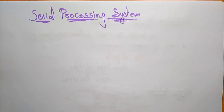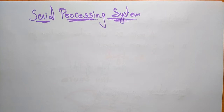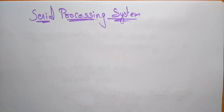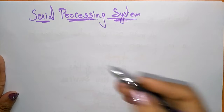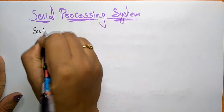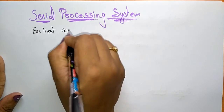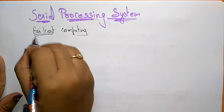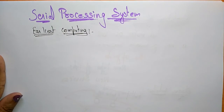Hi students, let us come into the next topic in the operating system. In the previous video, I explained the introduction part of the operating system, covering different stages included in it. The first stage is serial processing, where a serial concept is included in the operating system. Serial processing is done in the earliest computing systems only.